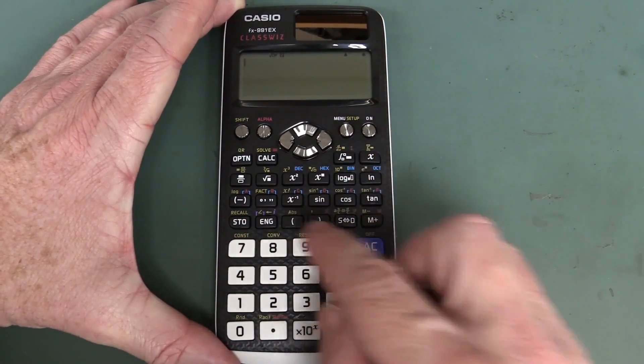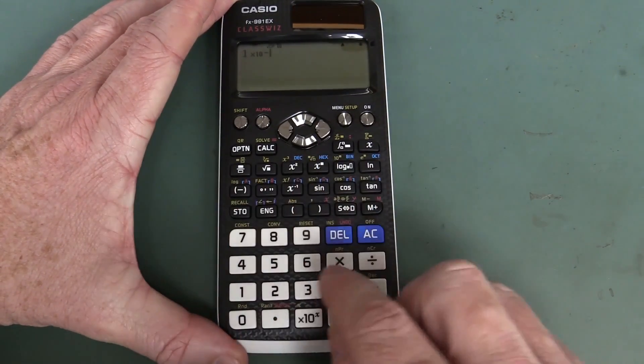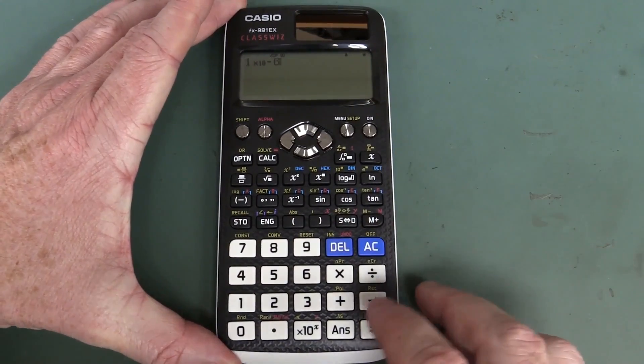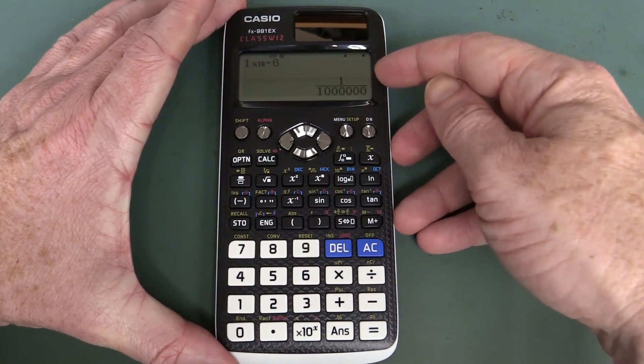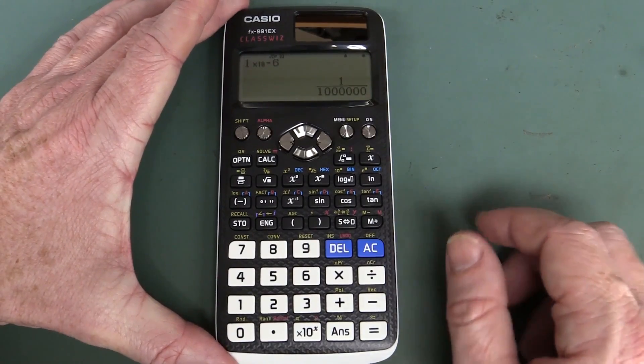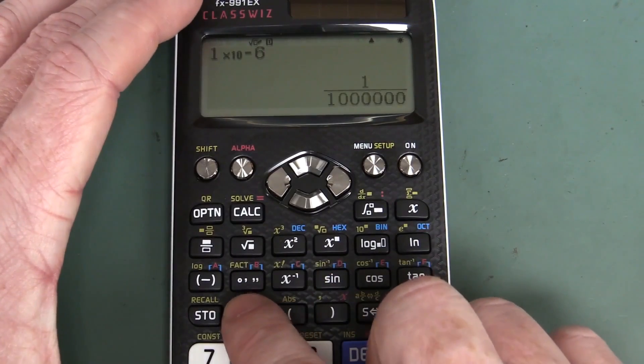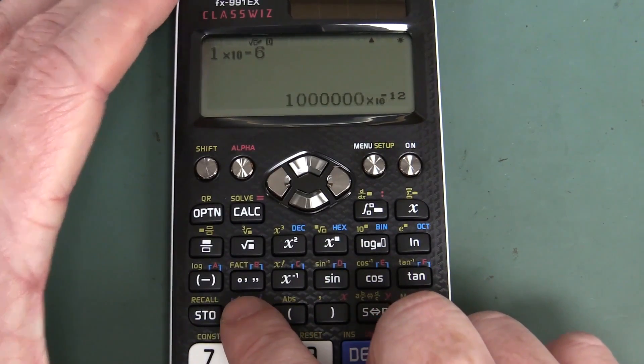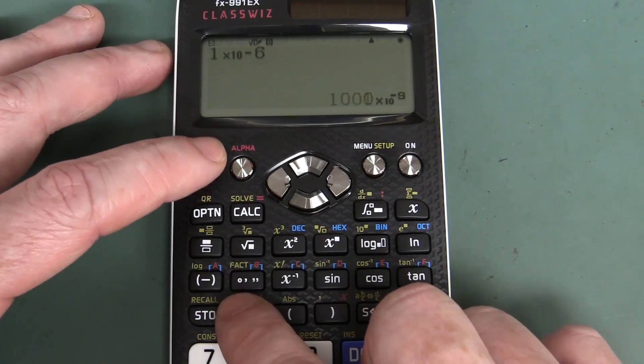It's got the regular engineering key. So one times ten to the power of minus six. If you're in micro for example, if you've got that as a result, then it actually converts it into a fraction. Look at that, one on a million there. But then you can just go in there and hit your magic engineering key like that, and you can hit it multiple times, and it'll tell you. Look at that, no problem whatsoever, just like regular Casio stuff.